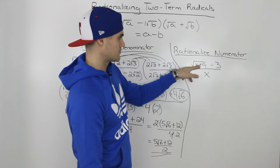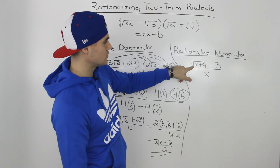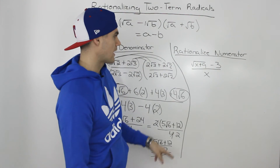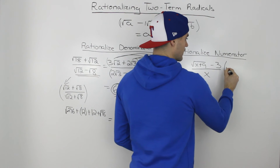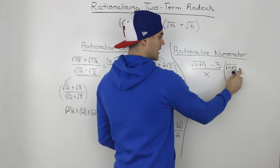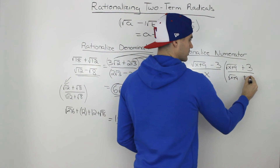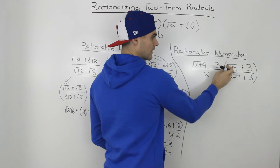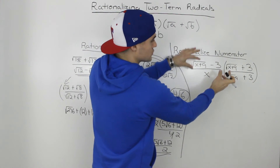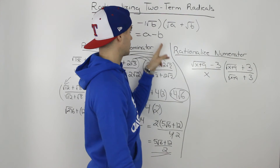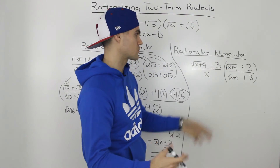Moving on to the second example: we have to rationalize the numerator of root (x plus 9) minus 3, all over x. Notice this is a two-term radical where there are two terms under the radical as well. The same process applies — we treat that entire radical as a single term. Since we're rationalizing the numerator, we multiply by the conjugate, which would be root (x plus 9) plus 3 — we just change the middle sign to positive.